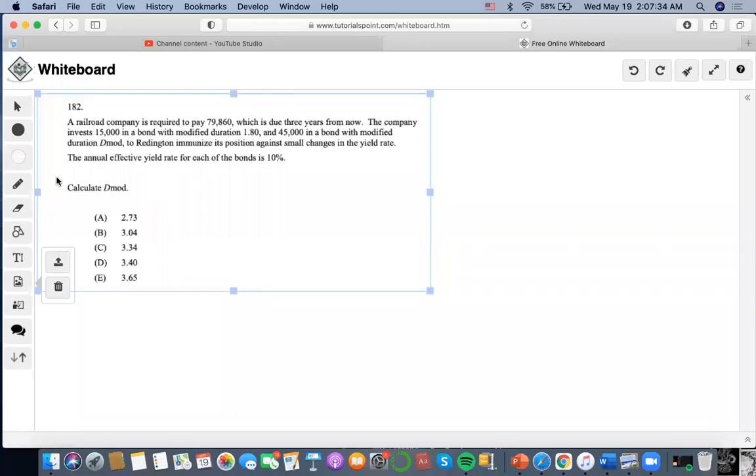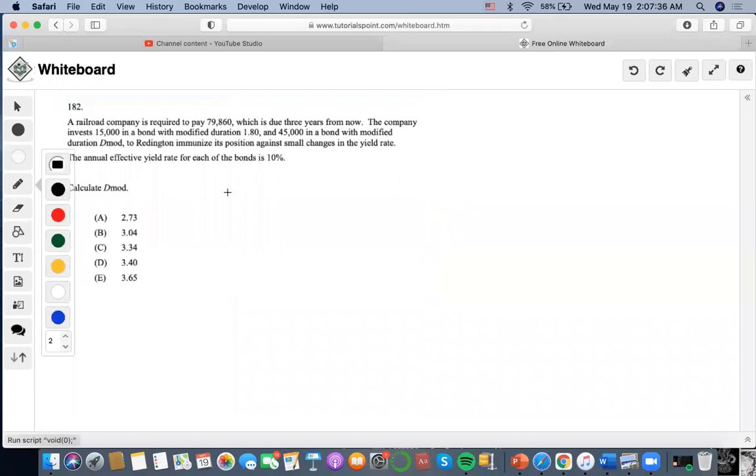Okay, so for this problem, it says that the company is required to pay $79,860, which is due three years from now, and the company invests $15,000 in a bond with a modified duration of 1.80. So we want to find what D mod is.